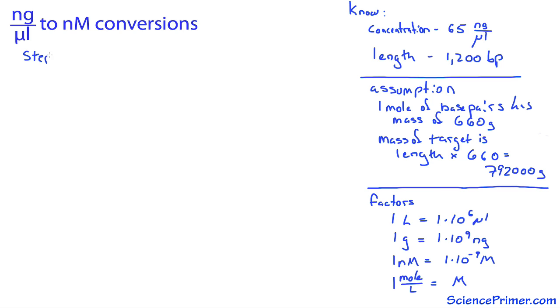Armed with this information, here is step one: convert from nanograms per microliter to nanomolar. The flow of unit conversions will be starting with nanograms per microliter, convert to grams per microliter, then to moles per microliter, then to moles per liter, a mole per liter is molar, and then convert molar to nanomolar. This checklist will help keep track of the process.